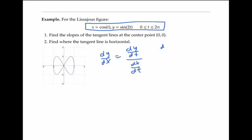Now dy/dt is going to be cos(2t) × 2, and dx/dt is going to be -sin(t). Taking the ratio, we see that dy/dx is 2cos(2t) / -sin(t).